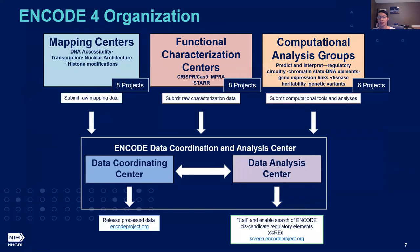Just a little bit about how this fourth phase is organized: there are 24 awards that are spread across five components. We actually have eight centers focused on functional element mapping, and these centers employ high-throughput and some lower-throughput genome-wide experimental assays that are being used to map biochemical genomic features associated with functional elements.